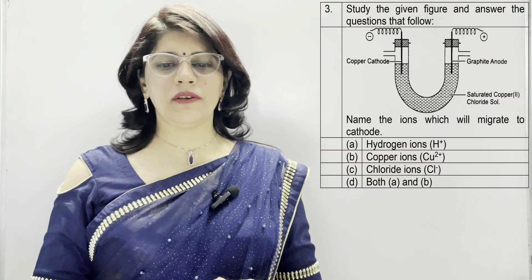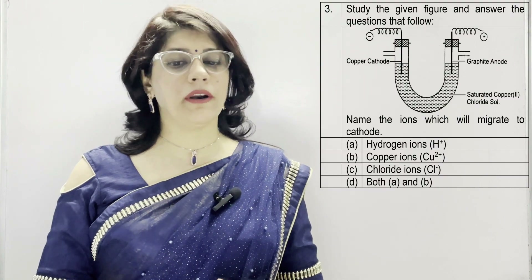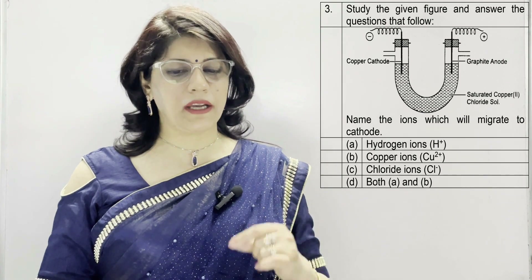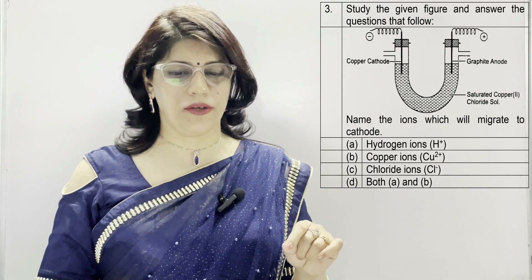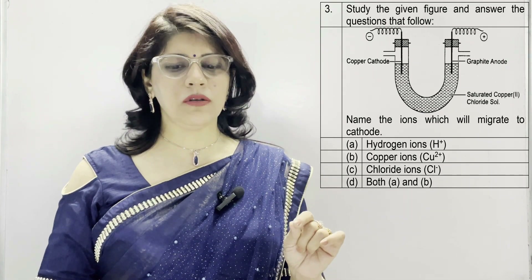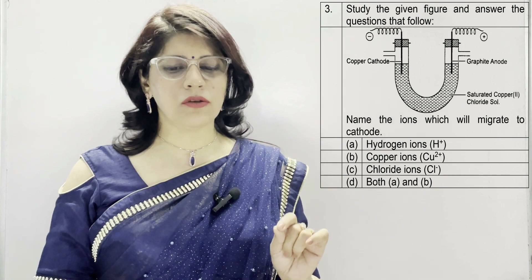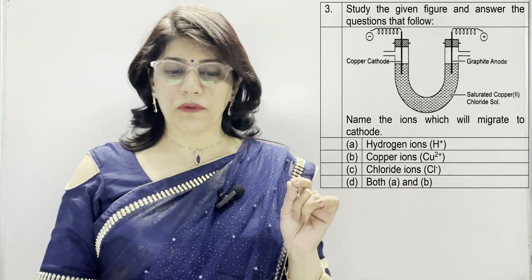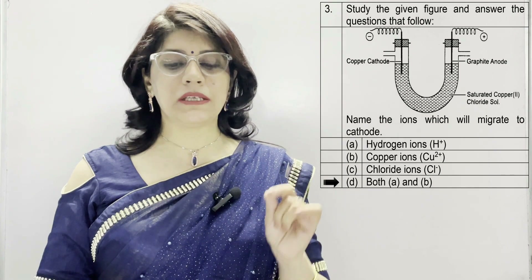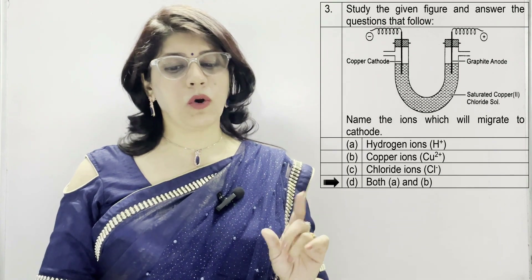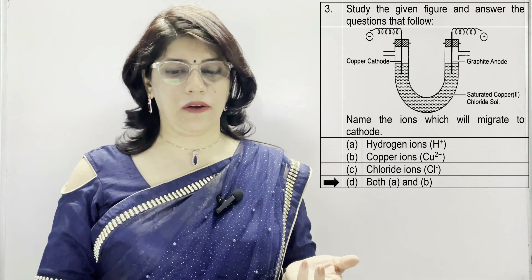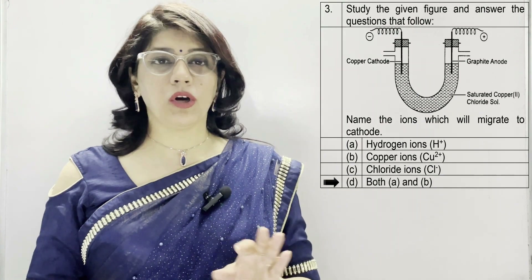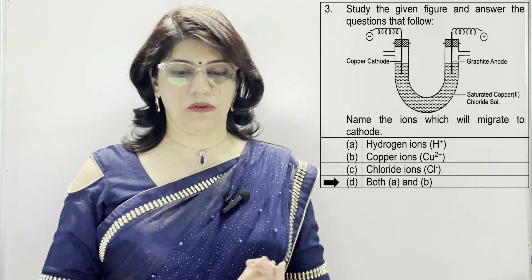In question number 3, study the given figure and answer the questions that follow. Name the ions which will migrate to the cathode. Options are: hydrogen ions, copper ions, chloride ions, or both A and B. Option D — both A and B — is correct because hydrogen ions and copper ions are both positively charged and will migrate to the cathode.